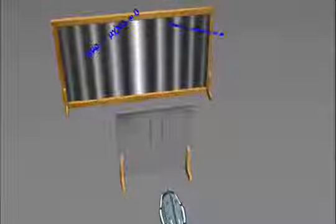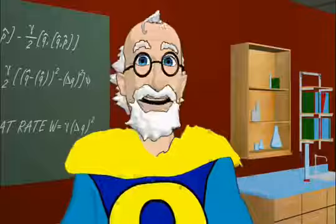It goes through both slits, and it goes through neither, and it goes through just one, and it goes through just the other. All of these possibilities are in superposition with each other.